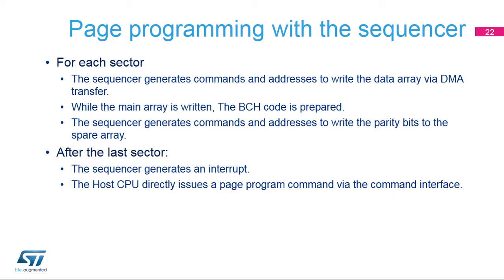The NAND Flash controller sequencer can perform one operation after another to program a complete page without any software intervention. For each 512-byte sector in the page, the sequencer sends the command and address to the NAND Flash main array, requiring only one DMA channel. It triggers a DMA request to write data to the NAND Flash main array. While data are written, the parity bits are computed by the BCH engine. The sequencer then sends the command and address to the spare array and writes the parity bits. Once all sectors are written, the sequencer generates a completion interrupt to the host CPU to issue a page program command. The software overhead is only one interrupt per page.